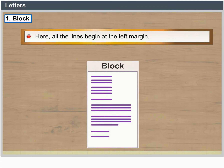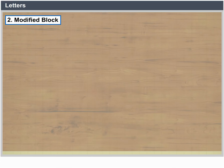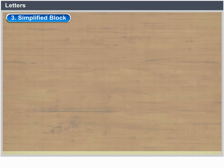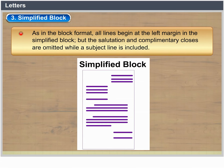1. Block: In this format, all the lines begin at the left margin. 2. Modified Block: In this format, the date line, complementary close and the signature block begin at or near the horizontal center of the page; all other lines begin at the left margin. 3. Simplified Block: As in the block format, all lines begin at the left margin, but the salutation and complementary close are omitted while a subject line is included.